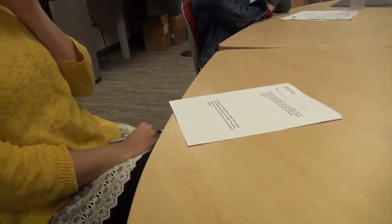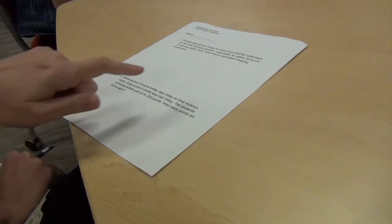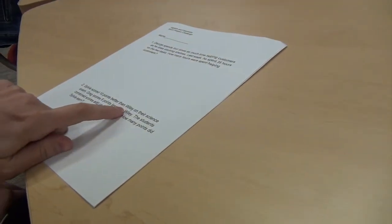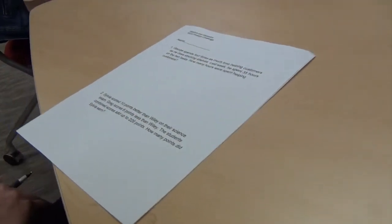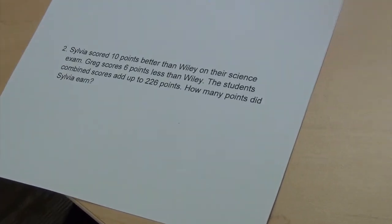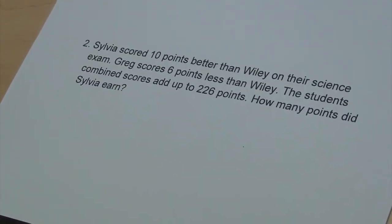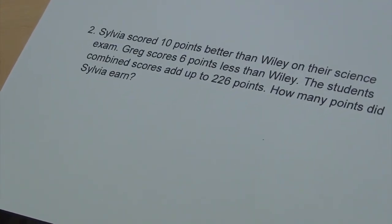Sylvia scored 10 points better than Wiley on their science exam. Greg scores 6 points less than Wiley. The students' combined scores add up to 226 points. How many points did Sylvia earn?